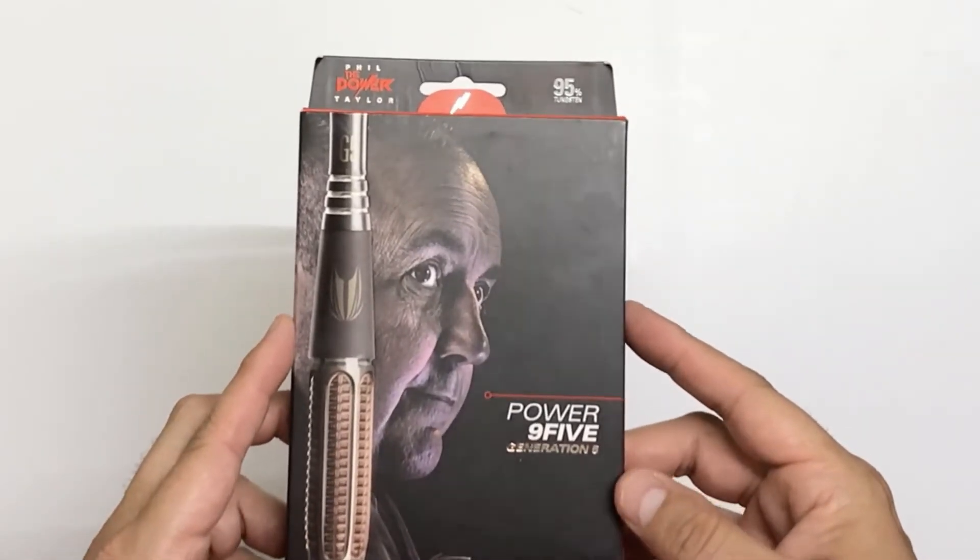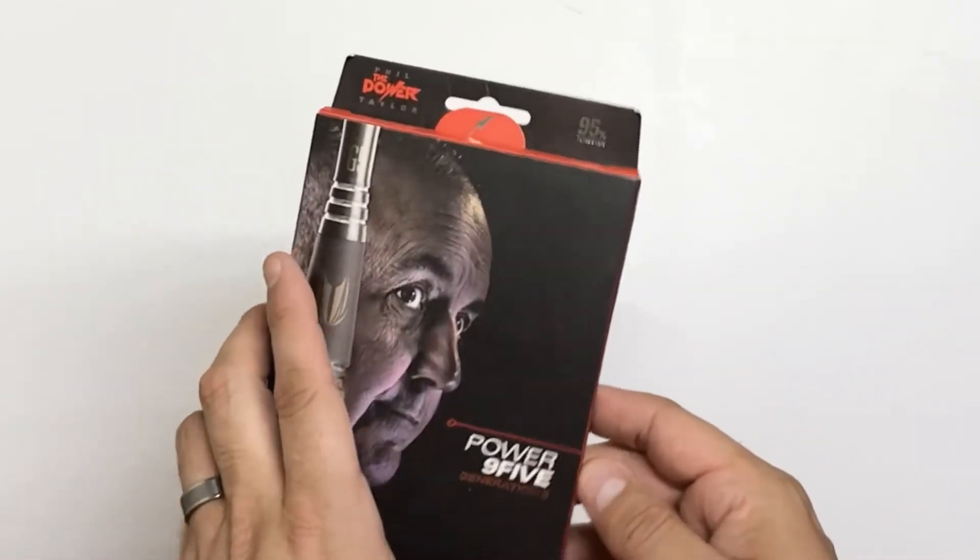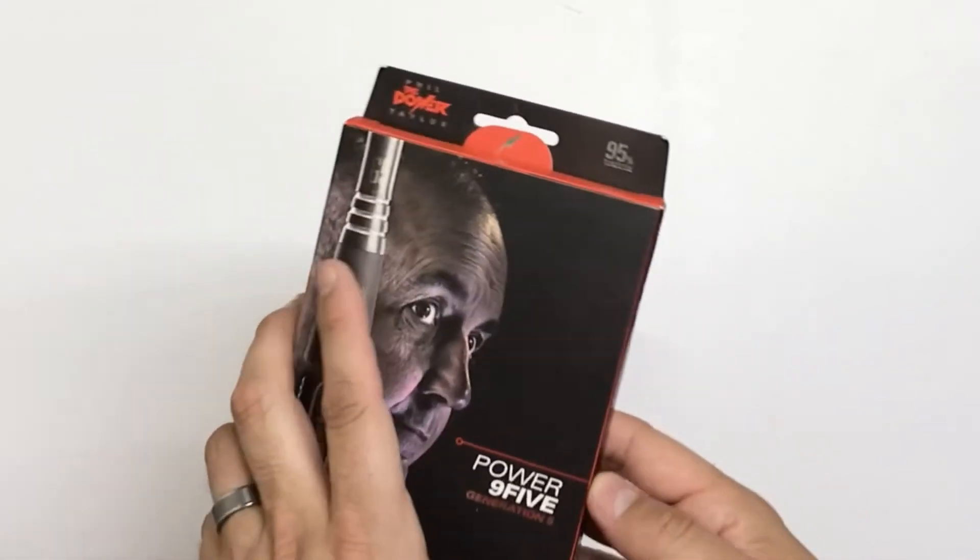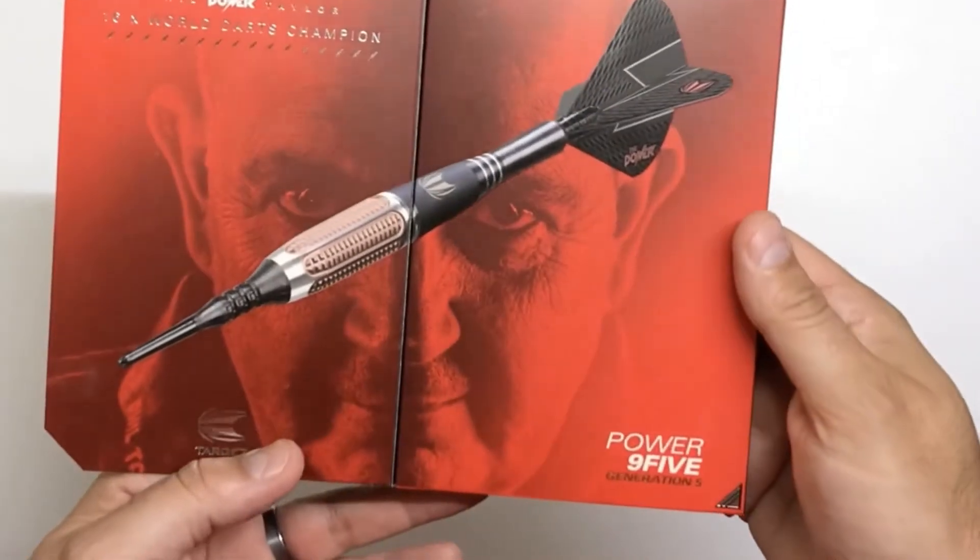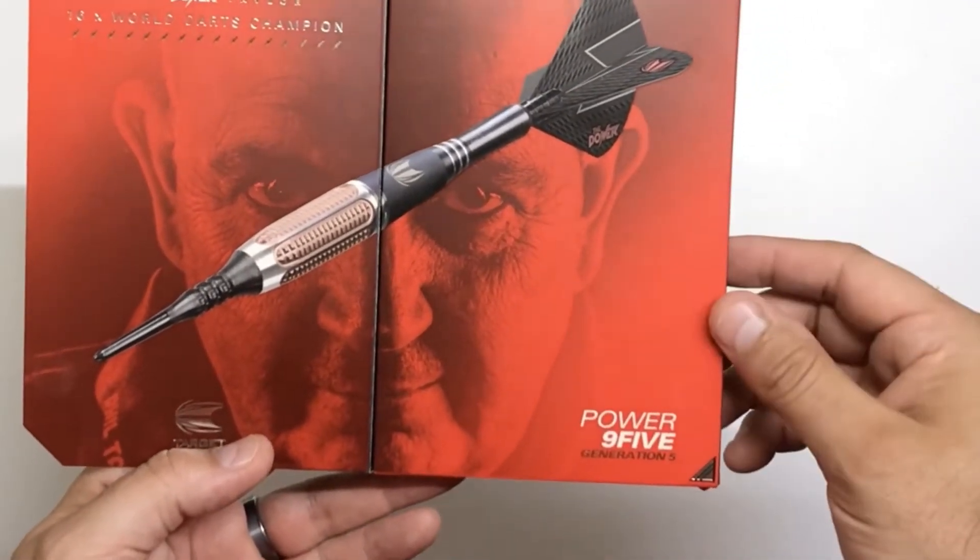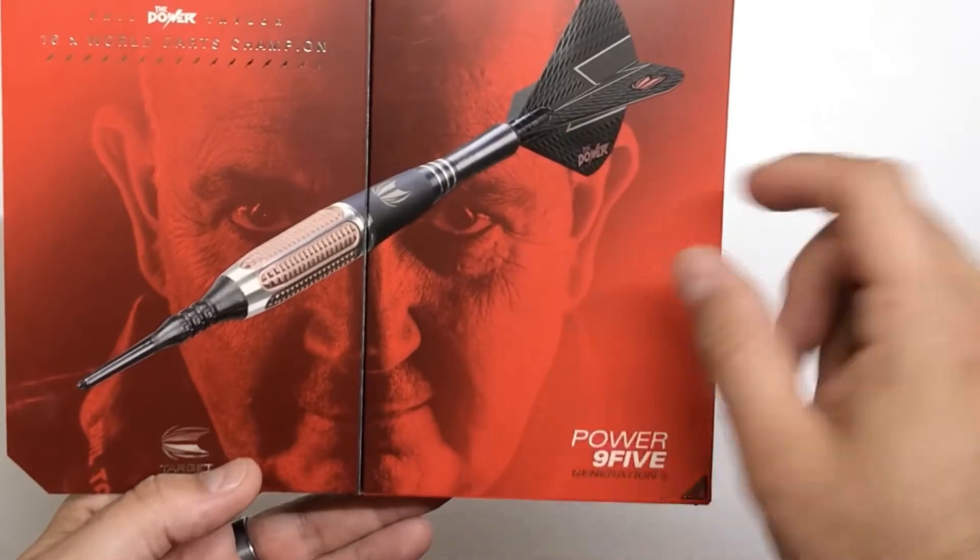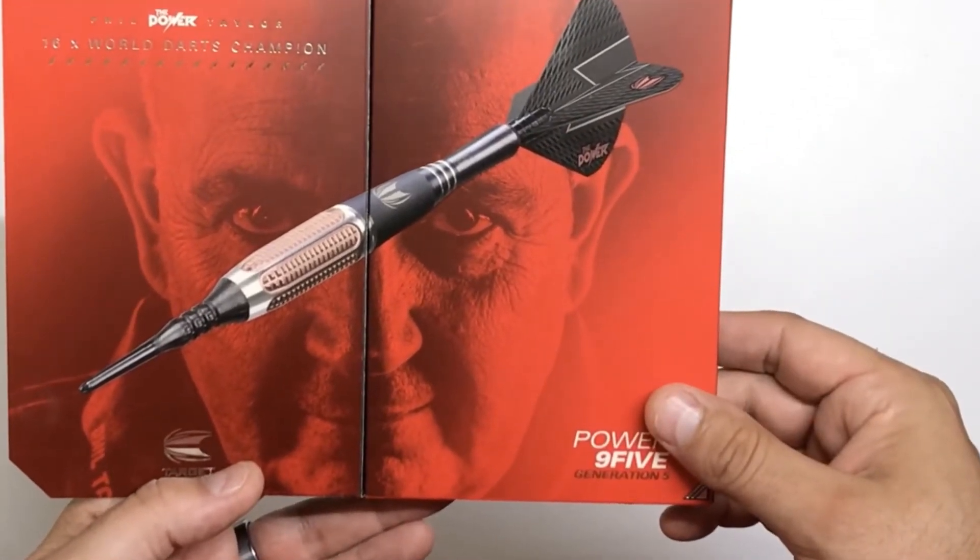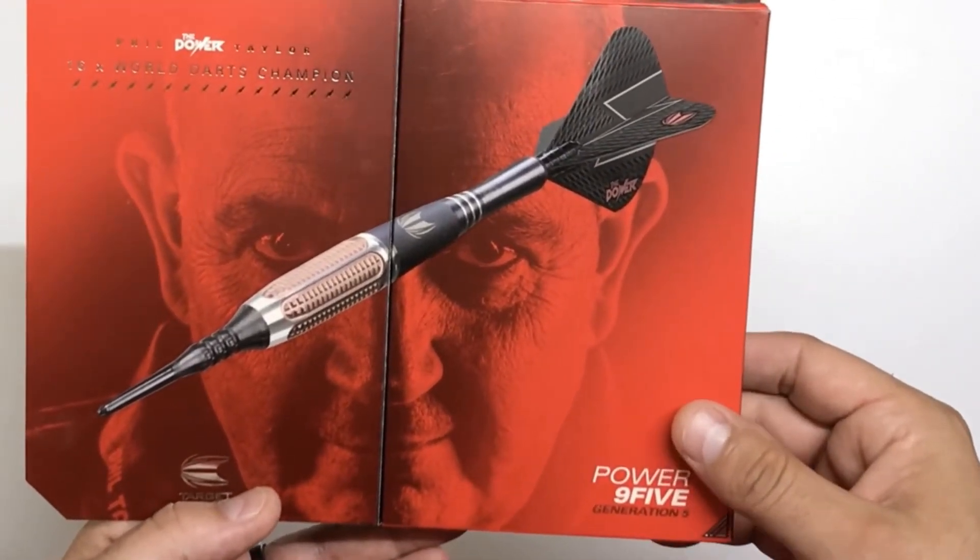Typical Target packaging here, nice box, nice advertisement on the front of Phil and the barrel. Open it up, you have some more advertisement of Phil with the actual dart here. Very nice looking dart, more of a torpedo shape as he was custom to throwing later in his career.